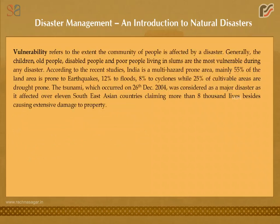Vulnerability refers to the extent a community of people is affected by a disaster. Generally, children, old people, disabled people, and poor people living in slums are the most vulnerable during any disaster. According to recent studies, India is a multi-hazard prone area: 55% of the land area is prone to earthquakes, 12% to floods, 8% to cyclones, while 25% of cultivable areas are drought prone.